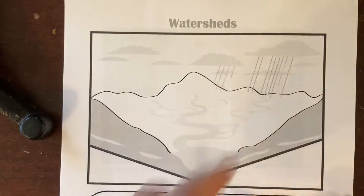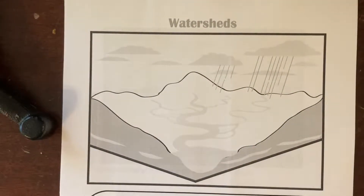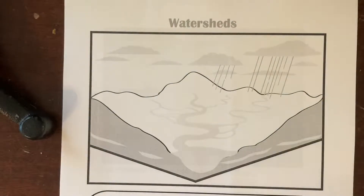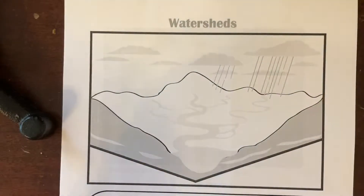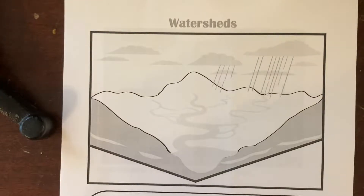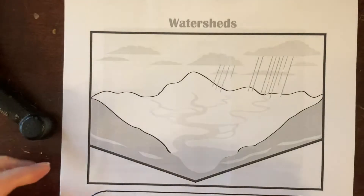Get out your watershed handout and we're going to fill this in. You need just maybe a blue color — you don't need very many colors. You can use a blue marker or a highlighter. You can pause the video until you get that.